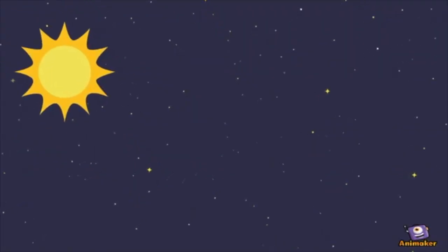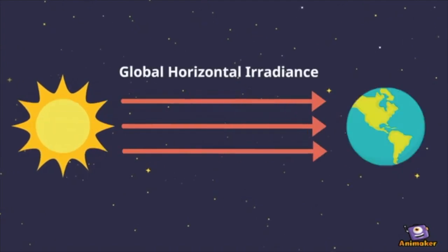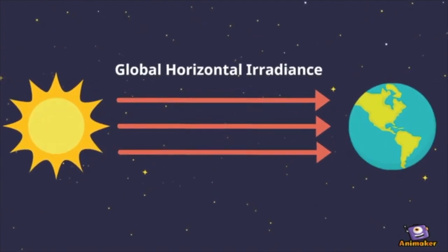We used data from 37 locations in Virginia over six years to predict the global horizontal irradiance. The global horizontal irradiance is the total amount of radiation received from above by a horizontal surface on the ground.